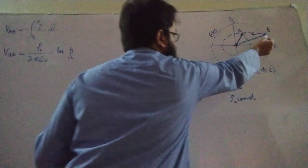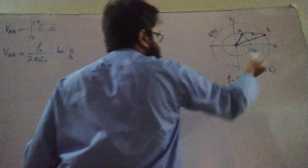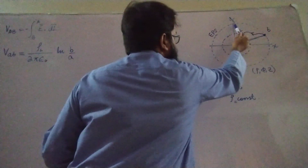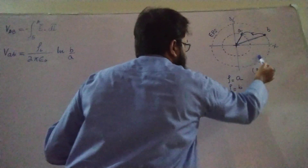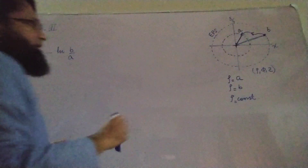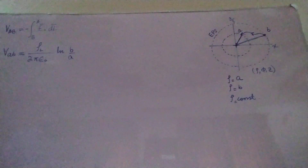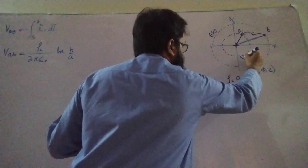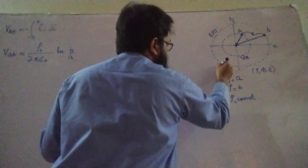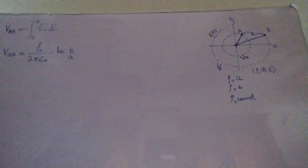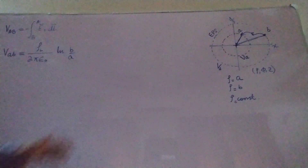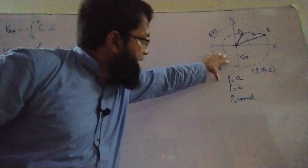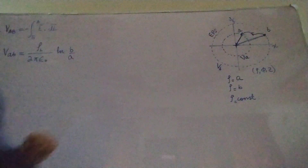Moving from one equipotential surface to another gives the same potential difference regardless of the path taken — straight line, zigzag, spiral, or any fashion. Starting from B and going to A in any case, the amount of work is the same and hence the potential difference is the same. Each equipotential surface has its own absolute potential associated with it.